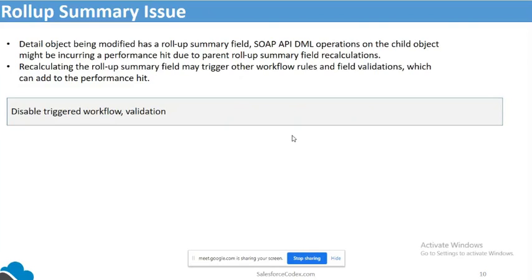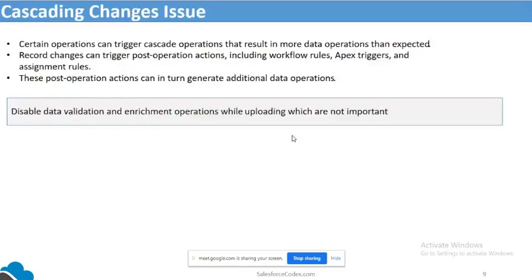To avoid that situation, you can disable triggers, workflows, and validations during the data upload. Sometimes child records create a problem, so if it's not strictly required, you can use a lookup relationship instead of a master-detail relationship — switch to lookup where you can, and use master-detail only when roll-up summaries are truly required. These are the five important points to consider when doing bulk loads using SOAP and REST APIs in your Salesforce system.